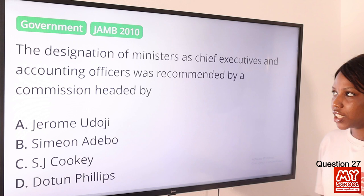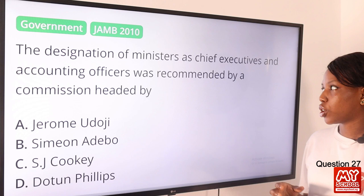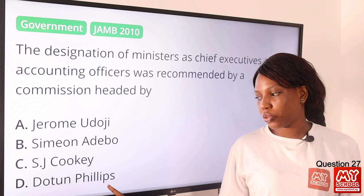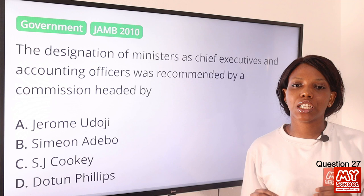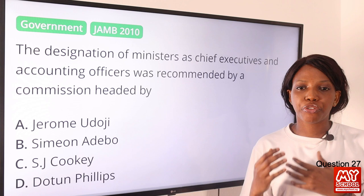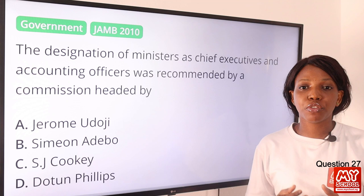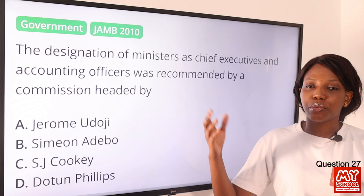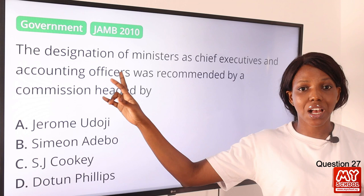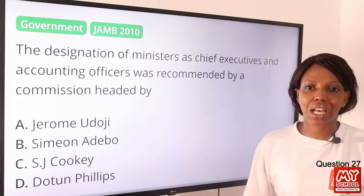Question 27. The designation of ministers as chief executive and accounting officers was recommended by a commission headed by? The answer is Dotun Phillips. The Dotun Phillips Commission of 1985 made an attempt to reform the civil service, which was implemented in 1988. One of its recommendations was that ministers should be regarded as chief executive and accounting officers, replacing the existing role of permanent secretaries. The answer is option D, Dotun Phillips.